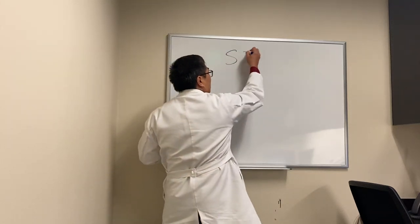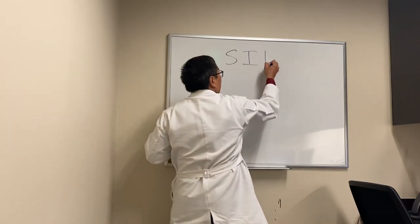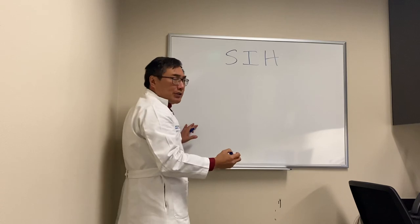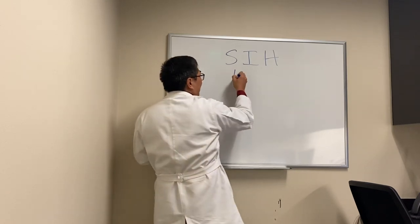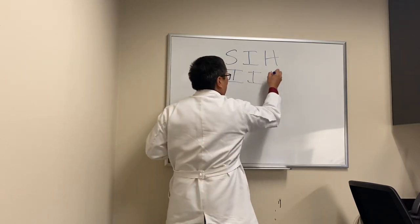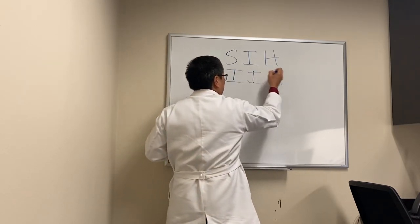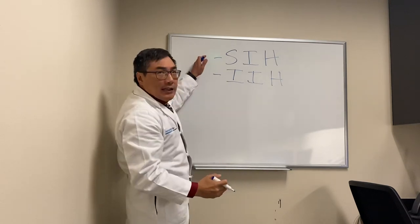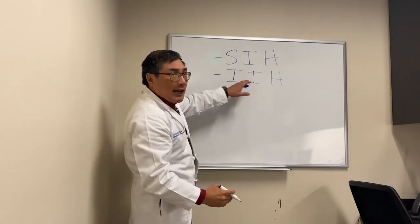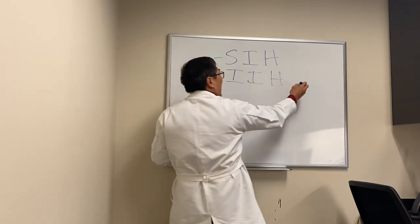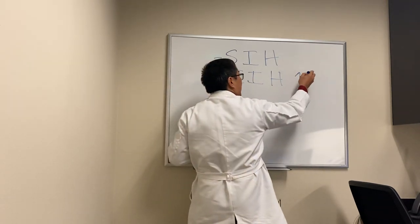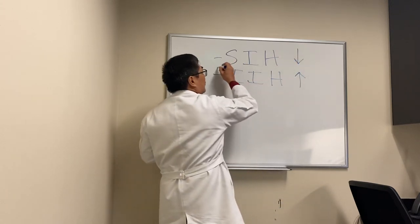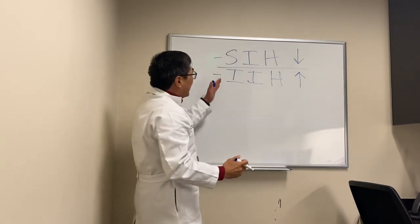Today we're going to be talking about spontaneous intracranial hypotension, and that's different than idiopathic intracranial hypertension. So we have SIH versus IIH. One is too high an intracranial pressure, and the other is too low an intracranial pressure.